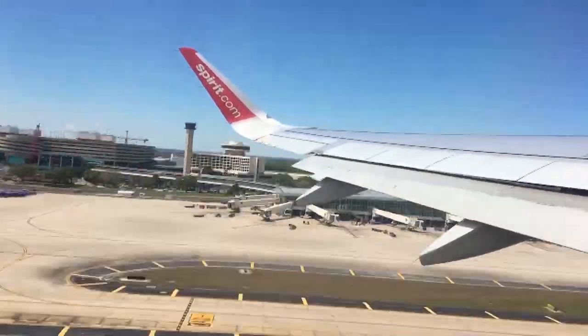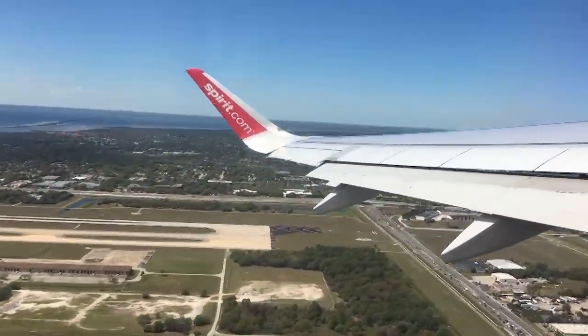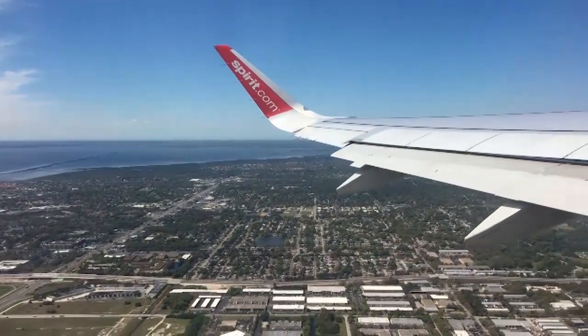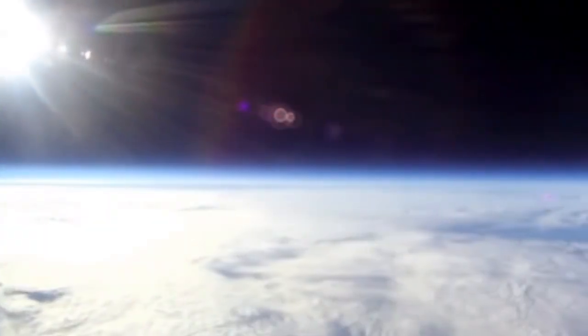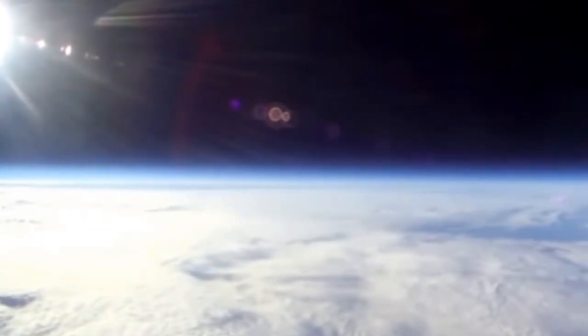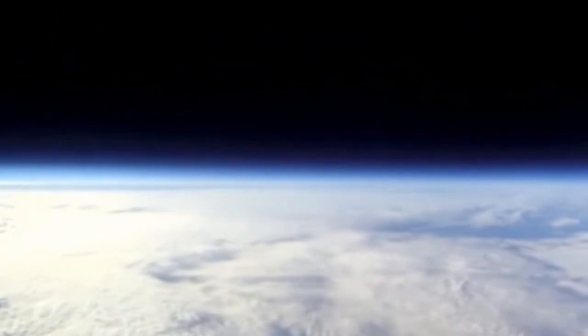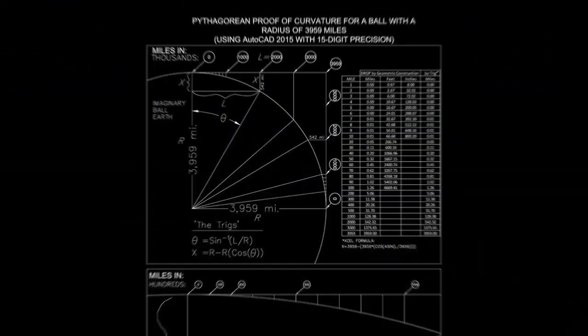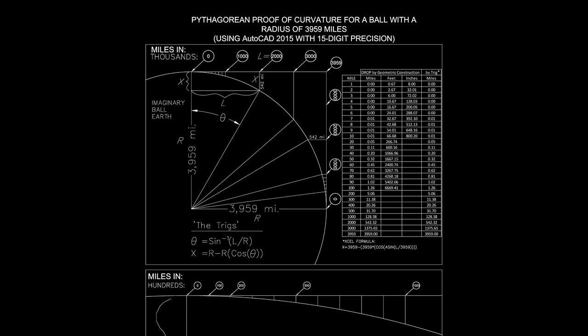Yet whether we're on the ground, or flying up to 37,000 feet in an airplane, or sending up a weather balloon to over 100,000 feet, there's that totally flat horizon straight ahead at our eye level. Always. That's simply not possible if it's receding downward and away from us at a rate of 8 inches per mile squared, which is what it must do.